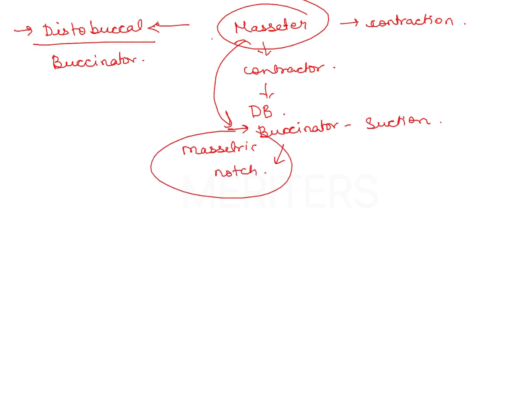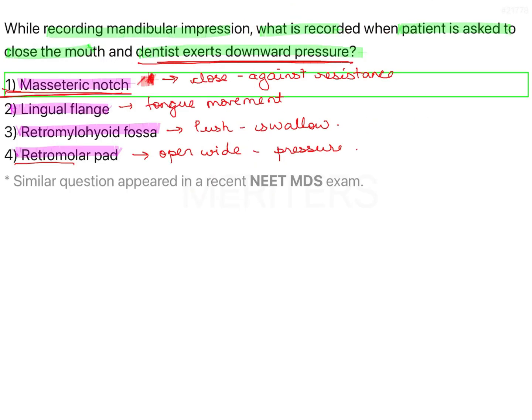So you have to record the masseteric notch. The correct answer — what is recorded by closing the mouth against pressure — is the masseteric notch, that is the distobuccal area.